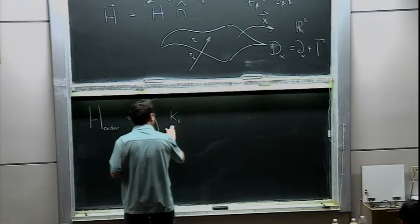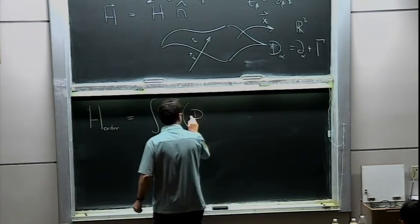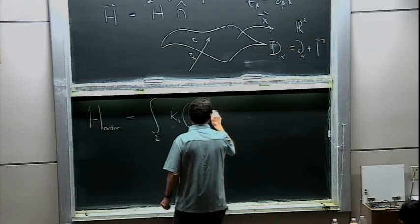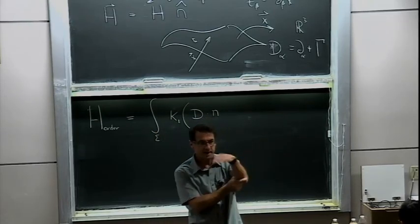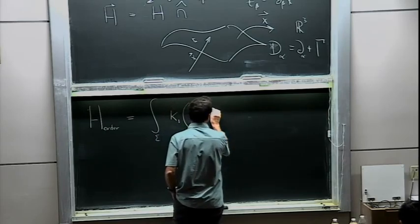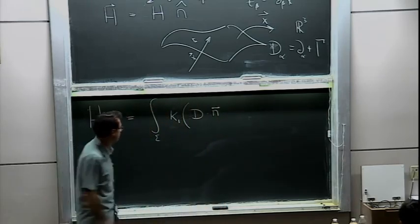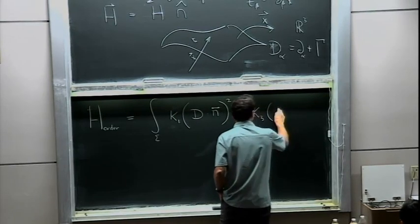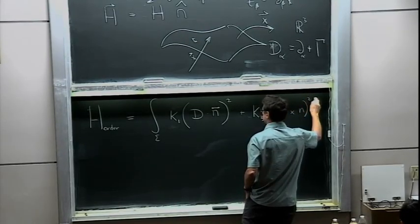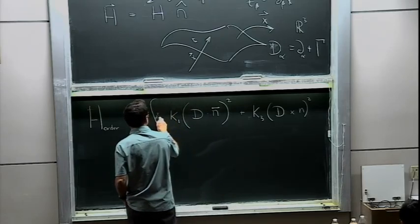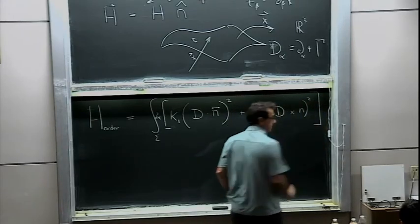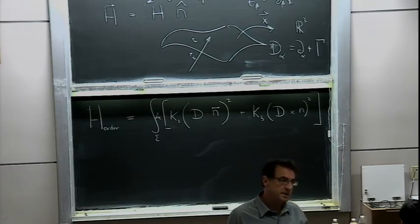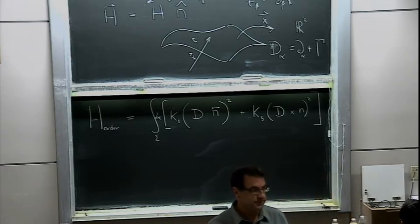For the 2D liquid crystal Hamiltonian, I have an integral over a surface to be determined, with two terms: splay, going with elastic constant k₁, which is the covariant divergence of the field n squared; and bend, k₃, which is the covariant curl of n squared. Here n is a line field — it only has an orientation, not a direction. So I should put arrows both ways. The covariant derivative is an ordinary derivative plus a connection piece following the surface.